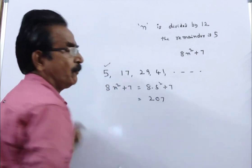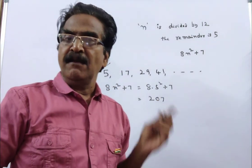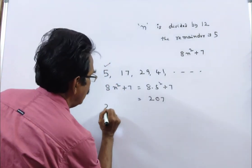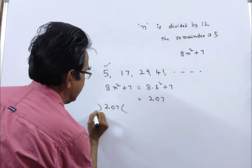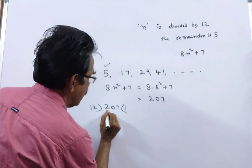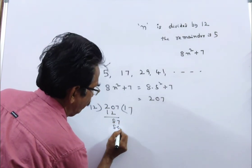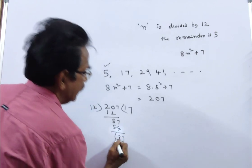That's 207. Now we have to find the remainder when 207 is divided by 12. 12 times 1 is 12, leaving 87. 12 times 7 is 84, leaving remainder 3.